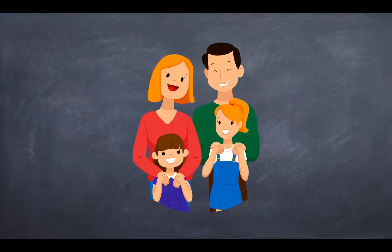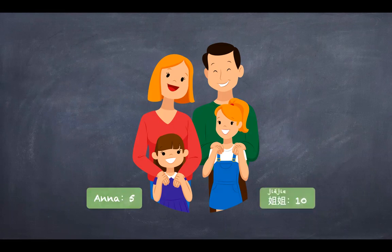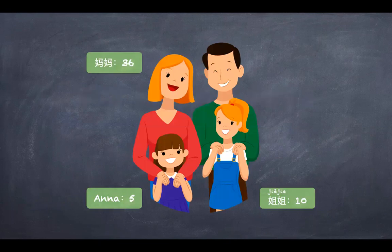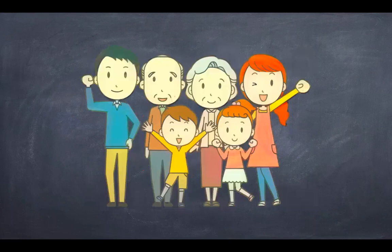For example, look at this family. This is Anna. Anna 五岁. Anna 的姐姐 几岁? Anna 的姐姐 十岁. Anna 的妈妈 多大? Can you answer? Anna 的妈妈 三十六岁. 她的爸爸呢? They are of the same age, so Anna 的爸爸 也 三十六岁.